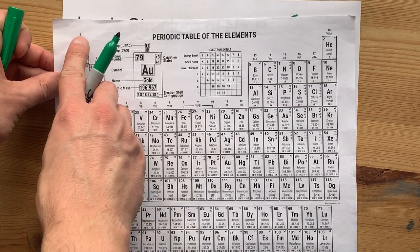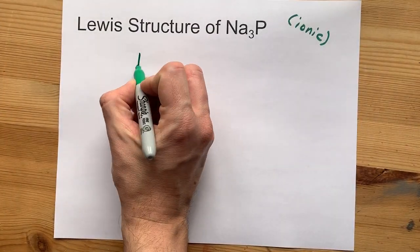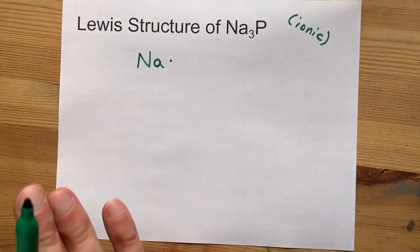Na is in group 1. That means it brings one valence electron with it. So I'm going to draw Na and put one dot there for the one valence electron.